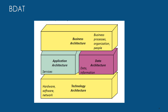Now let's understand what business architecture is. The business architecture describes how the enterprise needs to operate to achieve the business goals and respond to the strategic drivers set out in the architecture vision. I will discuss architecture vision in detail in later chapters. For now, remember that the business architecture defines the business strategy, governance, organization, and key business processes.